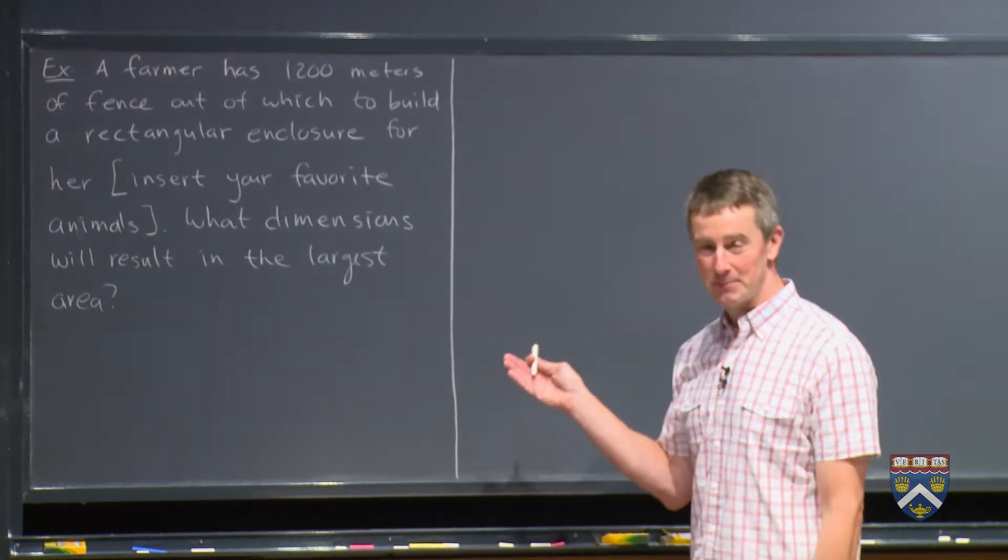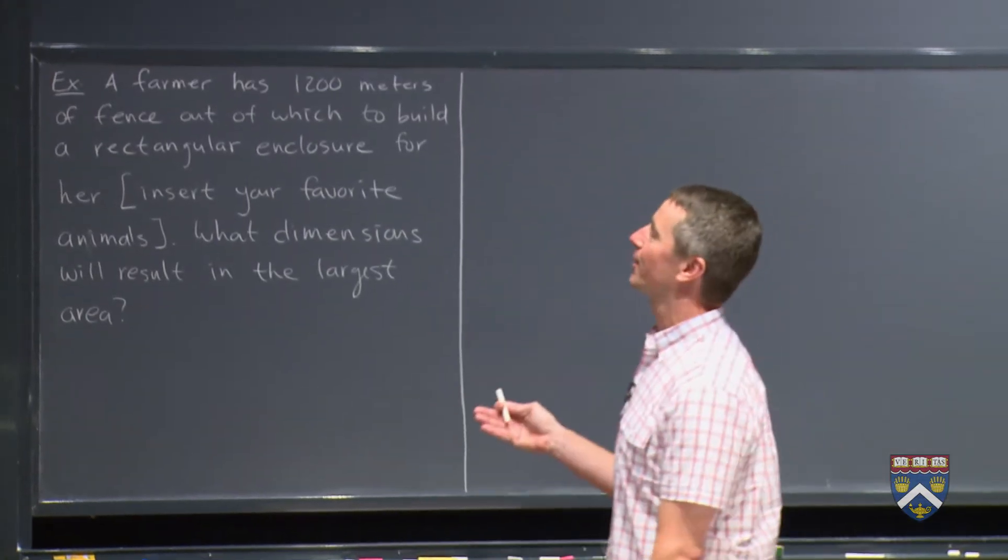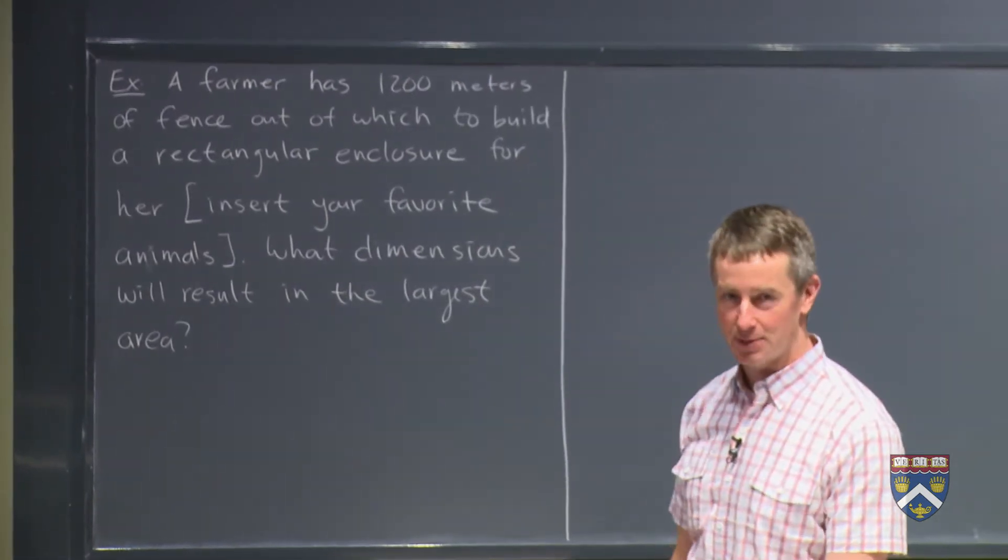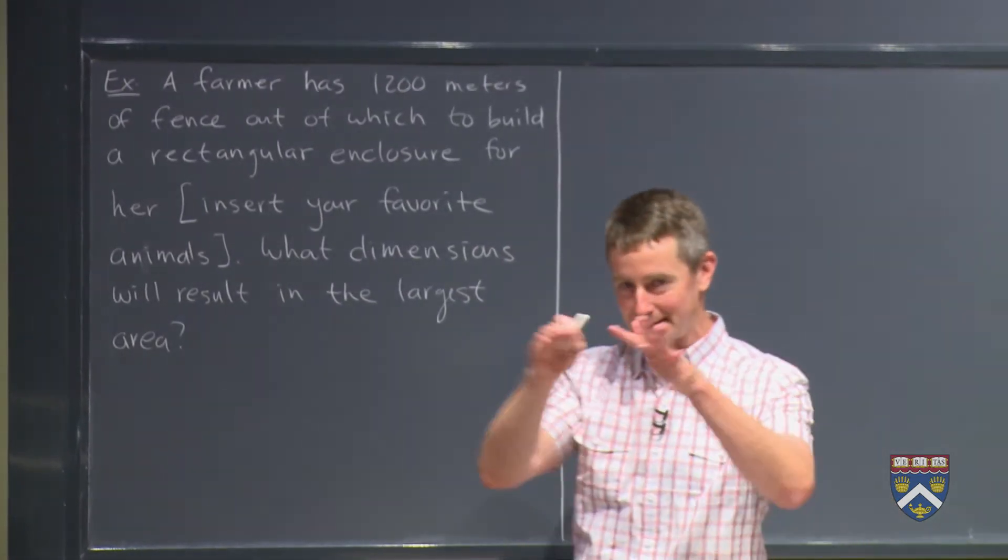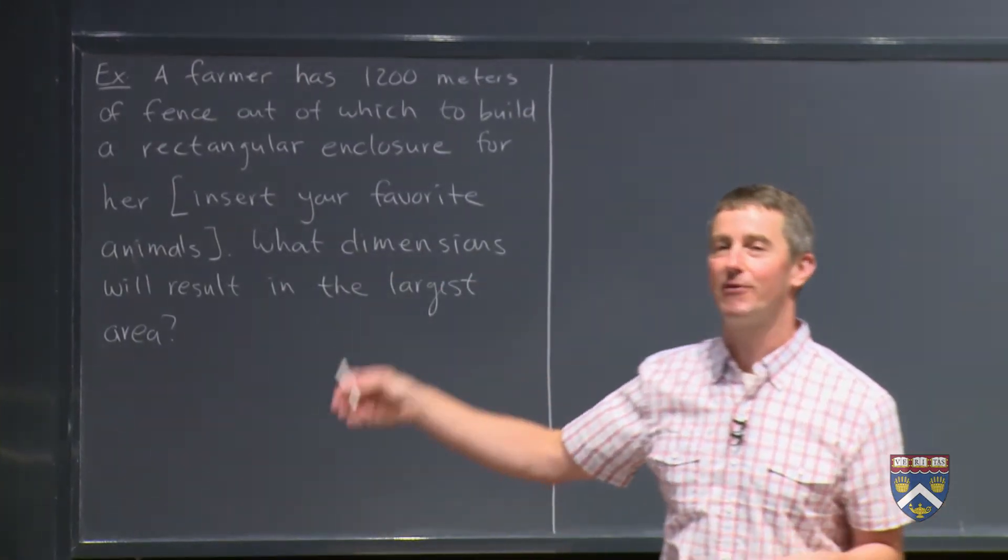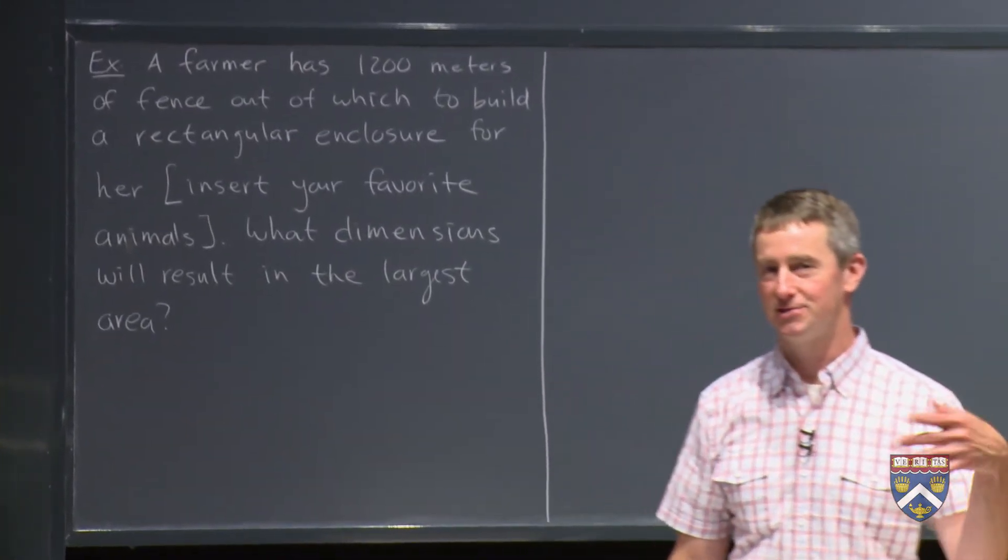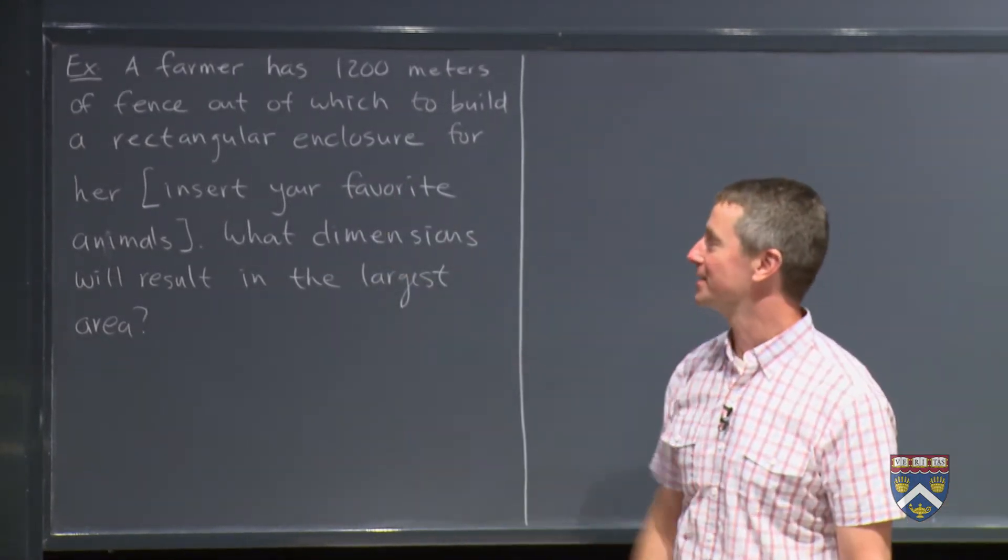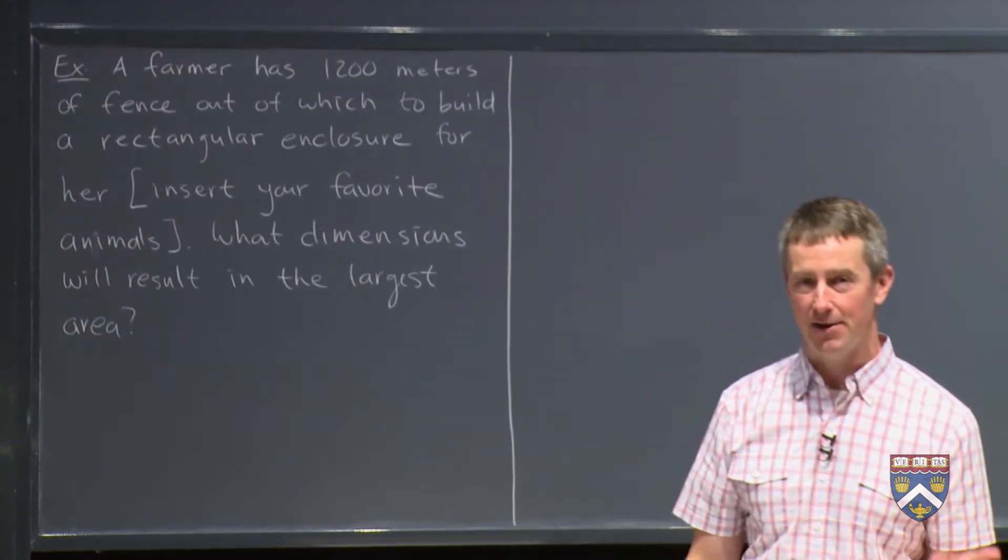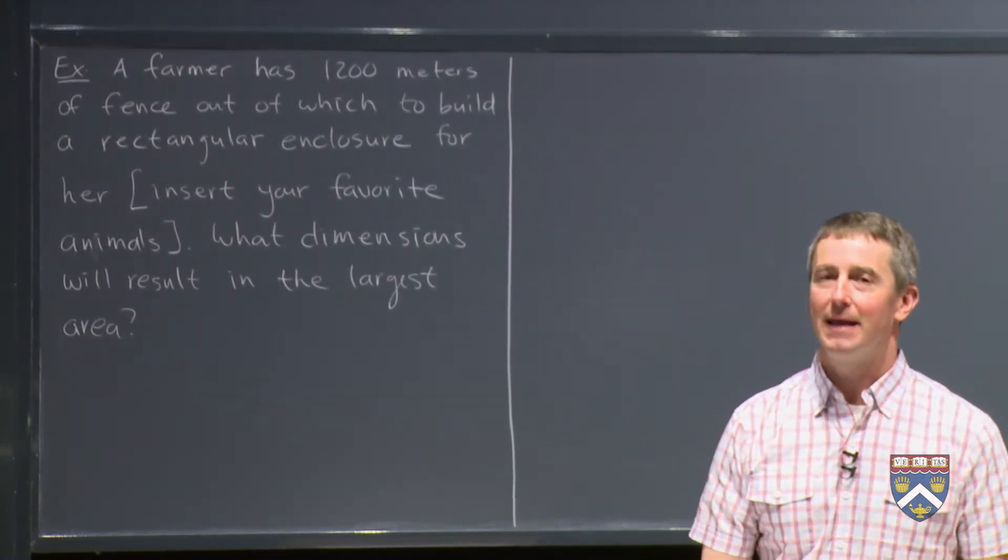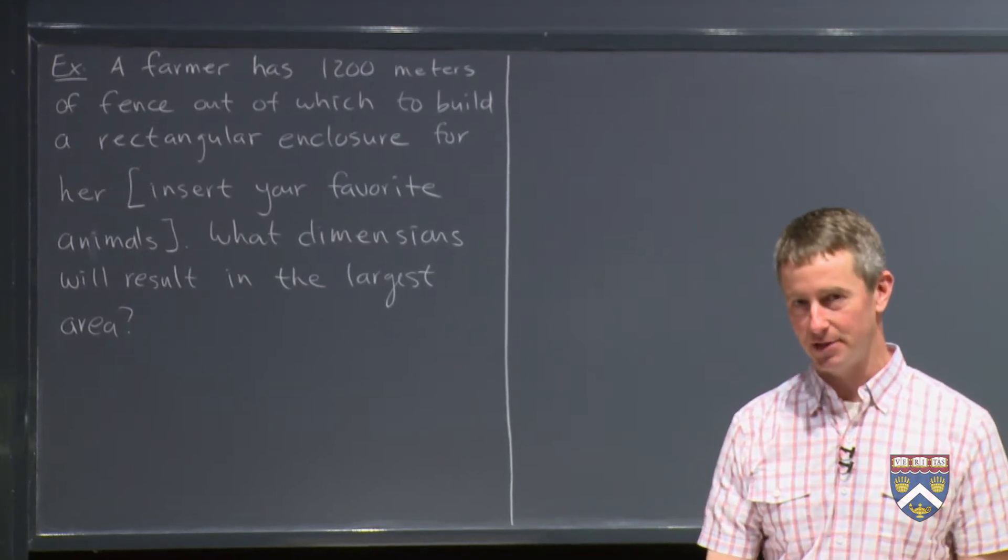So it's almost required that the first optimization problem you do in a calculus class is some variation on this one. A farmer has a certain length of fence, let's say 1,200 meters. She wants to build a rectangular pen, a rectangular enclosure for you choose whatever animals you want to put in there. Llamas, chickens, whatever your favorite kind of animal is. The question is what dimensions will result in the largest area for her animals? She wants to be as kind to her animals as she can.